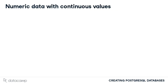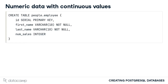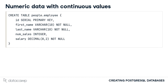Floating point, also known as decimal, value columns are also available in PostgreSQL. Let's revisit the employee table from earlier in this lesson. If we wanted to track the salary of each employee, we can use the decimal type to represent salary data in our table. The decimal type can take two arguments: precision and scale.